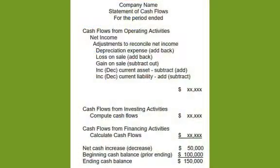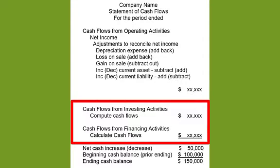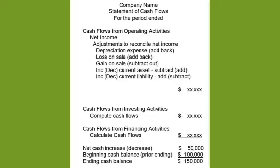The investing section and the financing section would then be the same as in our direct method. You would take your total changes in these three areas and total them up — in my example, they would total up to the $50,000 change. Our beginning of the year cash balance was $100,000, so that gets us to the $150,000 ending balance, which is what we would see in our balance sheet for cash and cash equivalents.